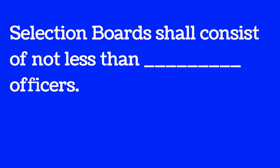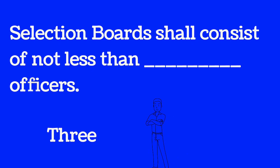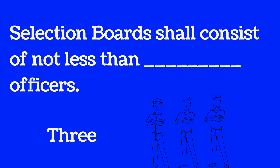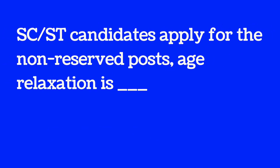Selection board shall consist of not less than 3 officers. We can see this in animations — just 3 members shown. Not less than 3 members.